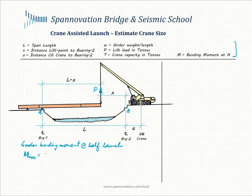M max would be equal to the unit weight of the girder system, which is small w, times the launched length squared — which would be L over 2, squared — divided by 4. So this works out to wL² over 8, and we'll call this equation 1.